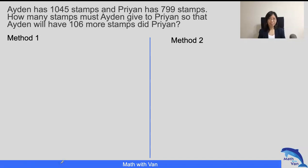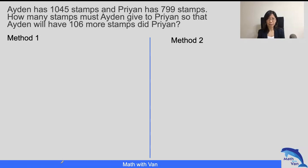Hello everyone, I'm Vanessa. Let's take a look at this commonly asked P4 question. Today I'm using two methods to show you how I can solve this question. Aiden has 1045 stems and Brian has 799 stems. How many stems must Aiden give to Brian so that Aiden will have 106 more stems than Brian?